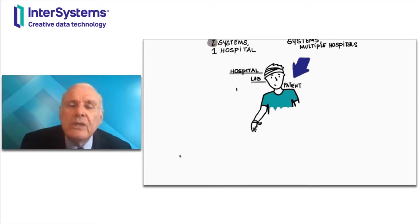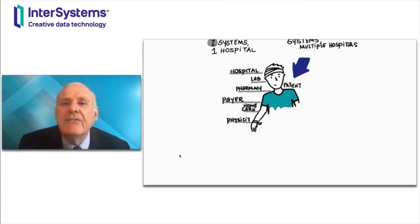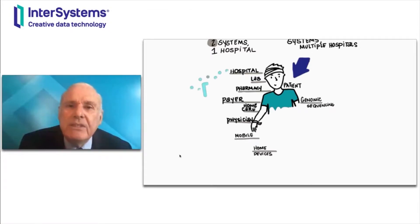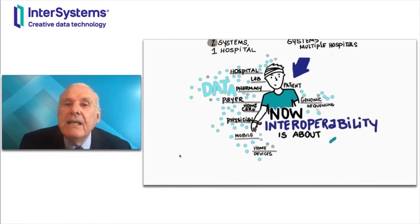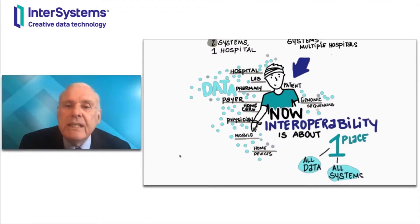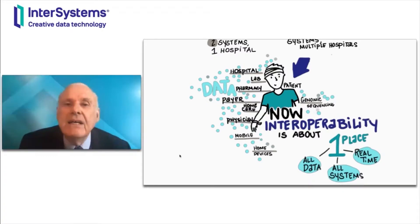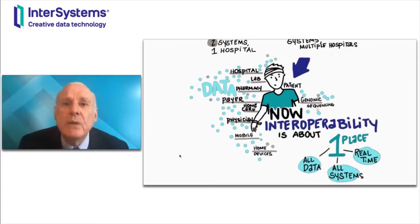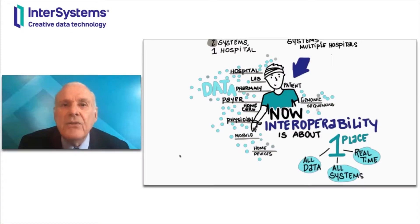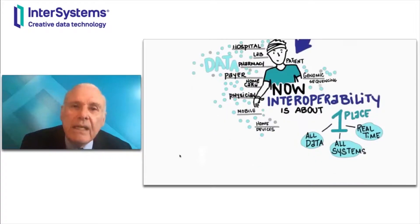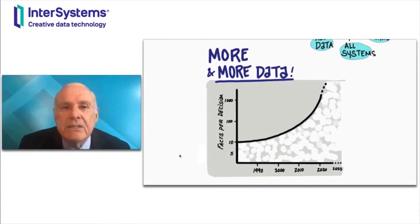Now, we also know that there's more and more data that's outside of hospitals. Pharmacies have data, payers have data, laboratories have data, mobile devices have data, genomic sequencing labs have data, home devices have data. And now, the meaning of interoperability has changed. Interoperability really means being able to be in one place and see all the data in those multiple systems for a patient or a population in real time. And not only is data in more places, but there is a lot more data.